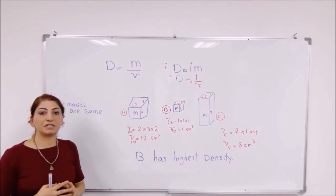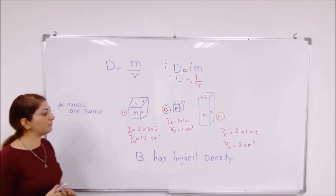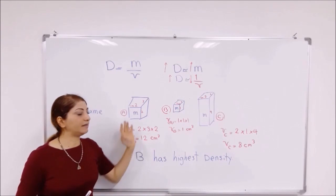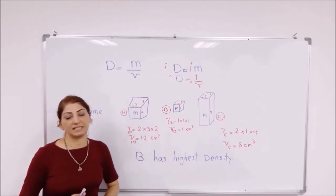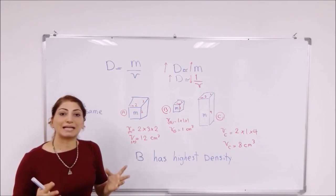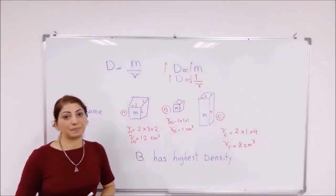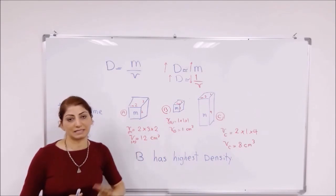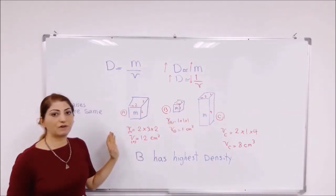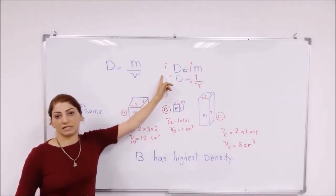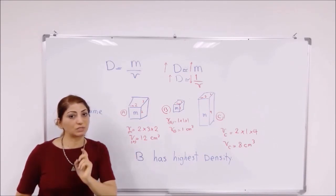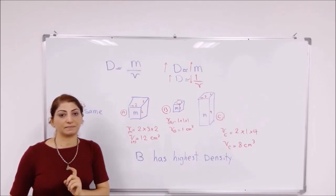Now let me give another example. This example asks you to find, among three shapes A, B, and C, which has the highest density. The question states that the mass for all three objects is the same. Since all of them have the same mass, what you have to find is the volume. The object with the lowest volume will have the highest density.